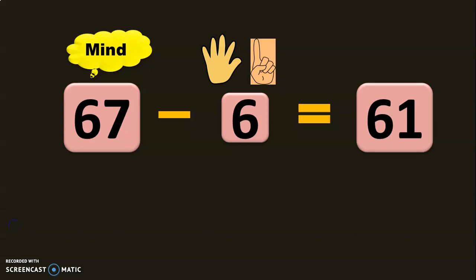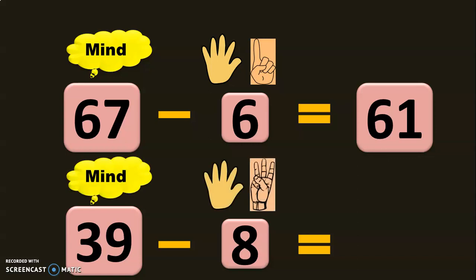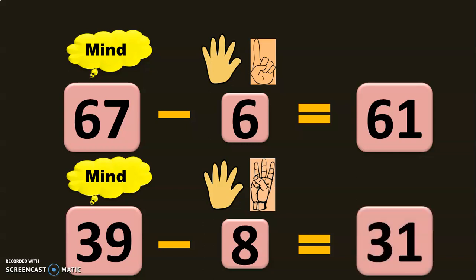Let us see the next sum: 39 minus 8. 39 in the mind, 8 in the fingers. To keep 8 in the fingers, you will keep 5 fingers in one hand and 3 fingers in the other hand. Before 39: 38, 37, 36, 35, 34, 33, 32, 31. So the answer is 31.